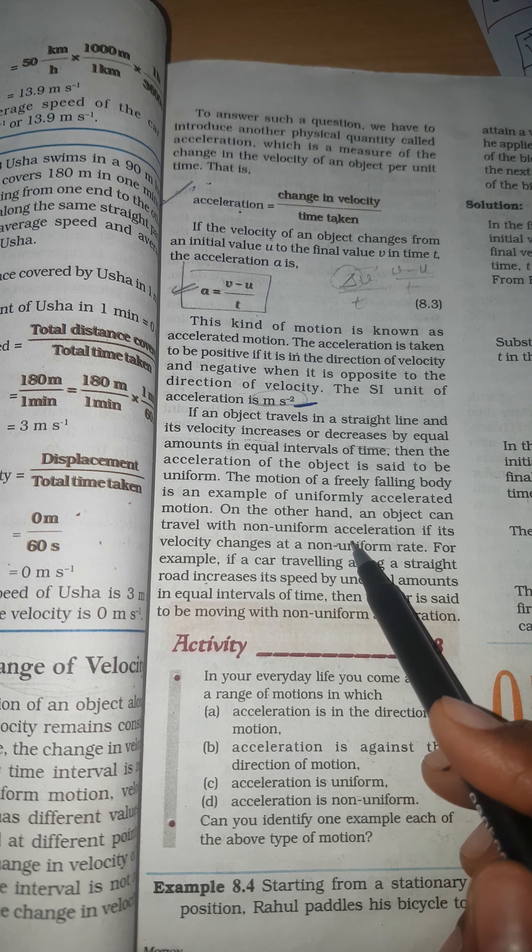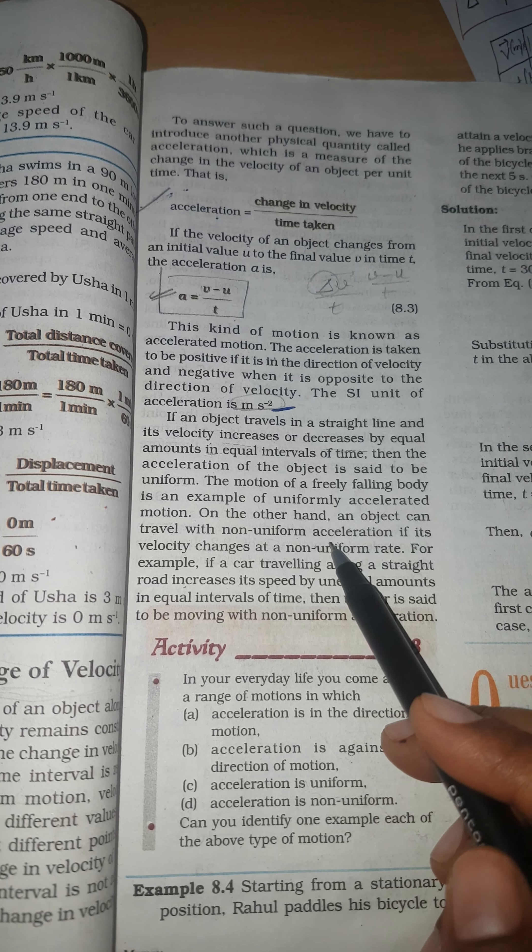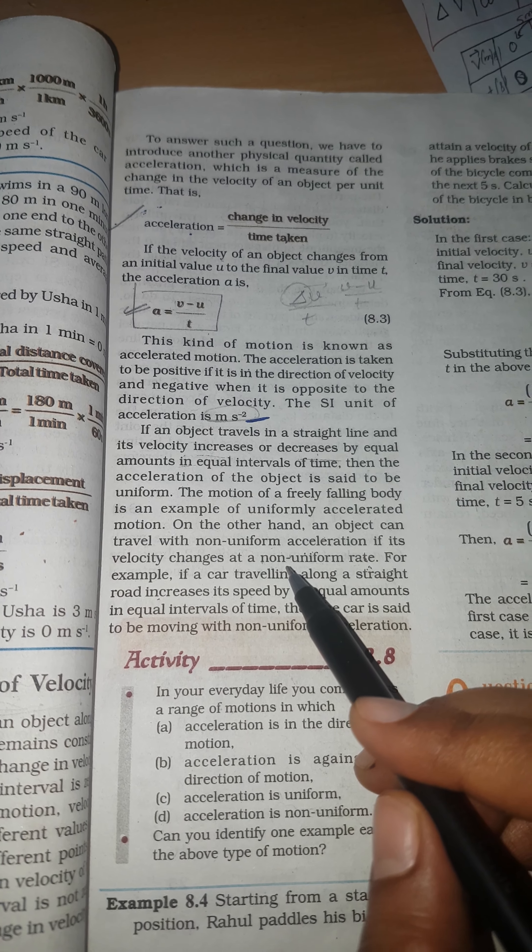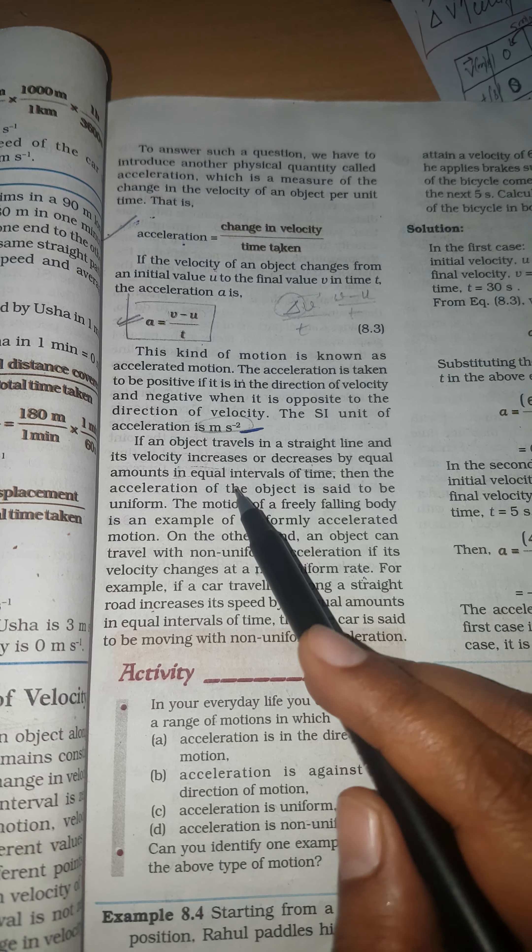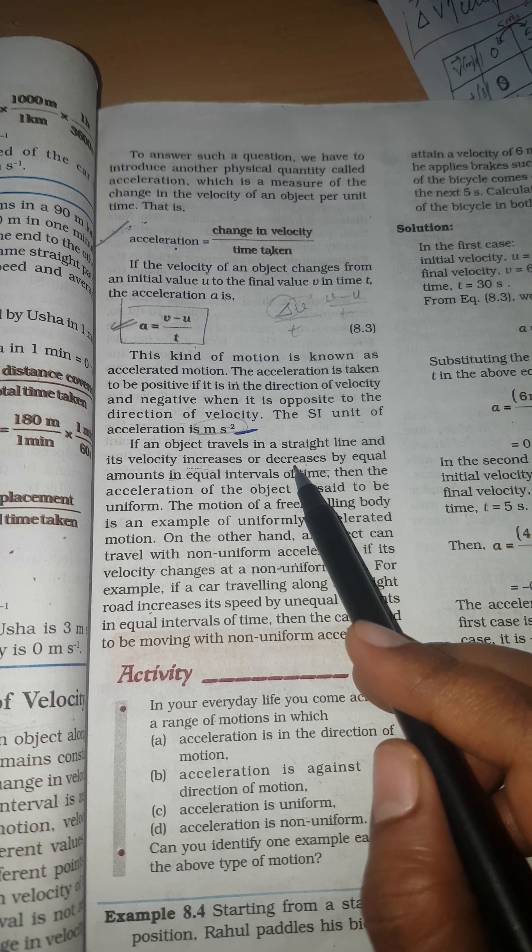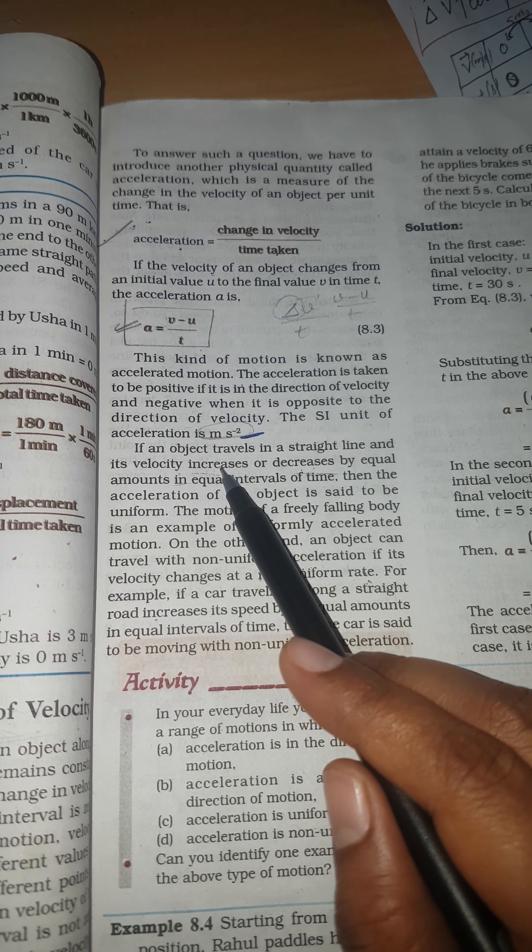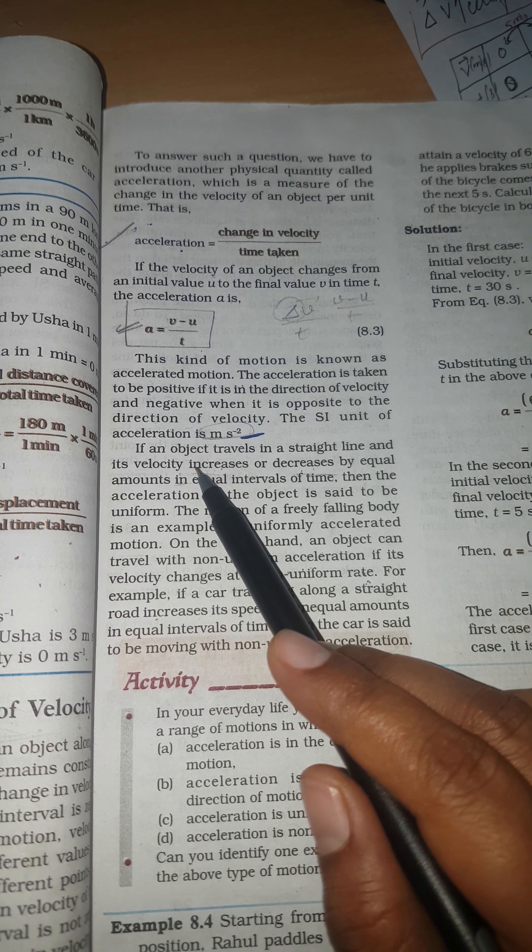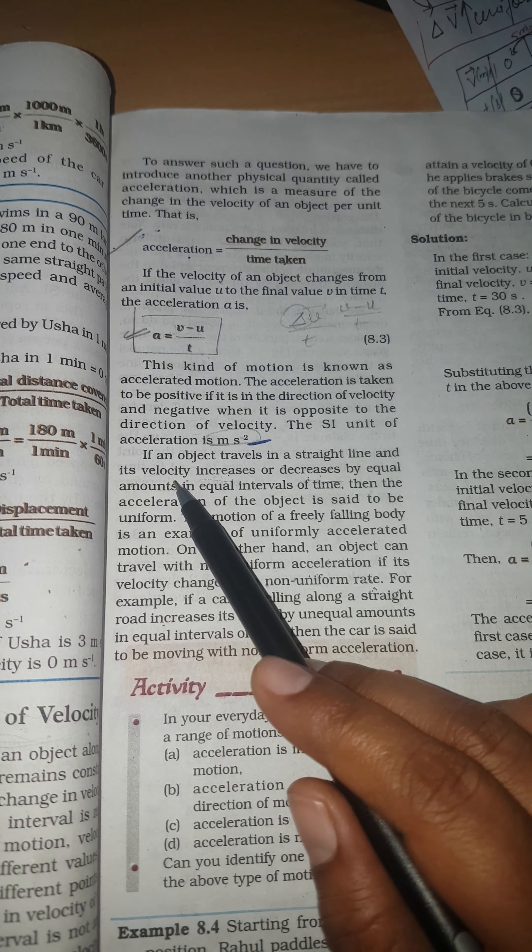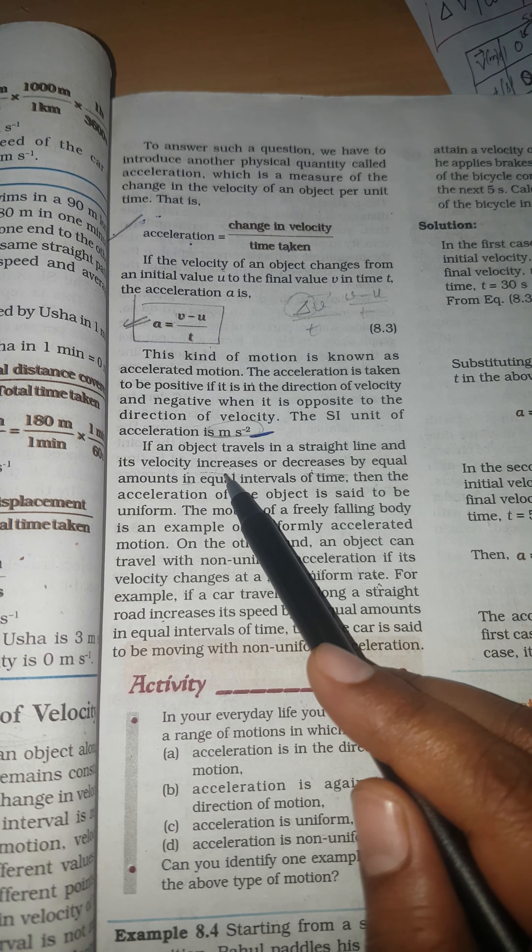Similarly, if velocity increases or decreases but by unequal amounts, an object can travel with non-uniform acceleration. Non-uniform acceleration has two types. If it's positive then it's positive acceleration. If velocity decreases then it's retardation. If its velocity changes at a non-uniform rate, the content covers both increase as well as decrease. If velocity is increasing then we talk about acceleration. If velocity keeps on decreasing then we talk about retardation.